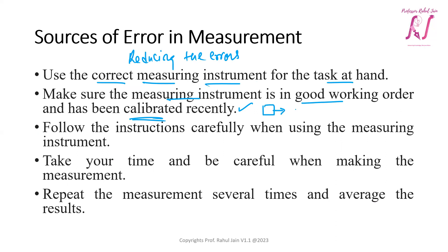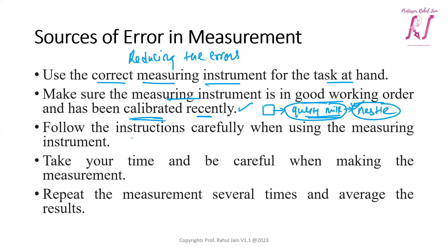For example, in a milk industry like Nestlé, there is a device that measures the quality of milk to determine whether to accept milk from farmers or not. This device should be calibrated frequently so that the parameters remain accurate and we do not end up accepting bad quality milk due to instrument errors.